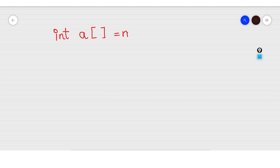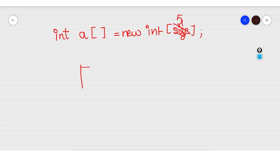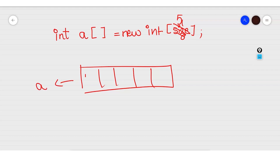After that, write 'new int' and then define the size of the Array. As an example, let's take size 5. In the computer memory, this is how the Array would be made — 'A' would be referencing it. The values it will hold are integer values, for example 17, 18, 1, 2, 3.